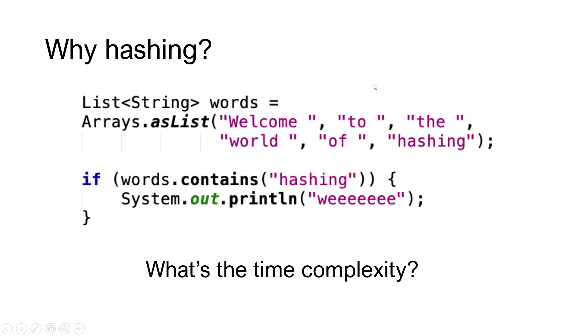But if we have this list here and we store a couple of words in there, welcome to the world of hashing, if we want to find a particular word in here we probably need to go through the whole list in worst case. If it is this example hashing then it will need to go through welcome to the world of hashing because it cannot just drop down in the specific word here.